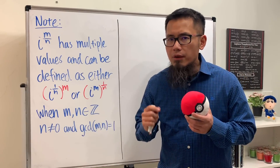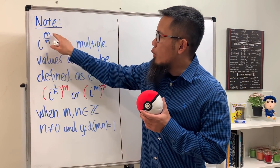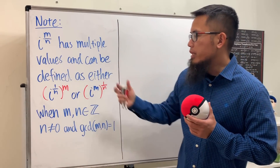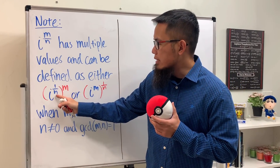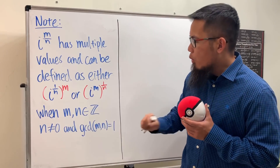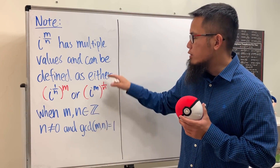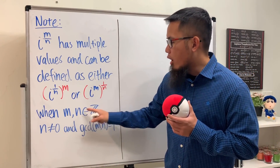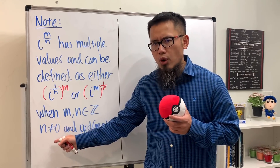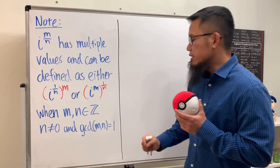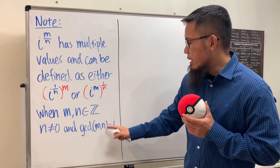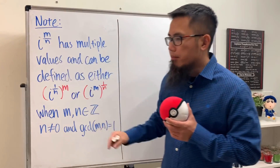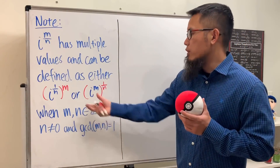This is the bonus part. Let's recall that i to the fractional power m/n has multiple values, and this can be computed as: i to the 1/n power first, then raised to the m power; or compute i to the m first, then raise to the 1/n power. This only works when m and n are integers, n is not zero, and the greatest common divisor of m and n equals 1 — meaning the fraction m/n must be in simplest form.